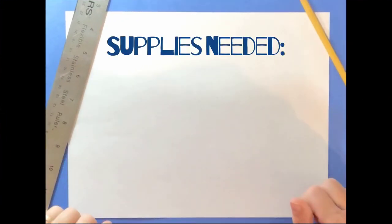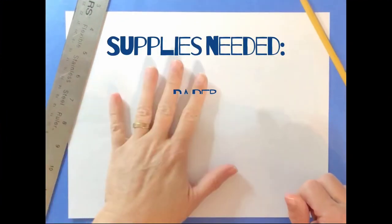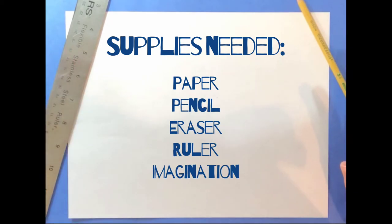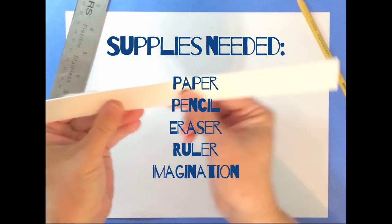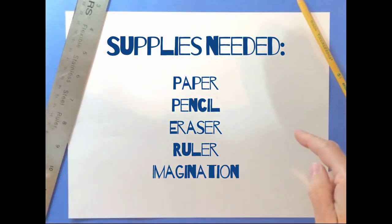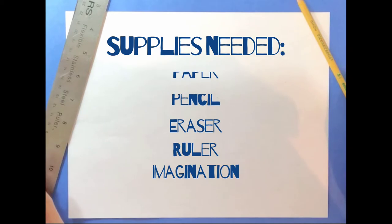Things that you'll need for this lesson include a piece of paper, a pencil, a ruler, a straight edge, which you could make from a folded piece of paper. If you don't have a ruler, this will give you a nice straight line to use. And of course your imagination.